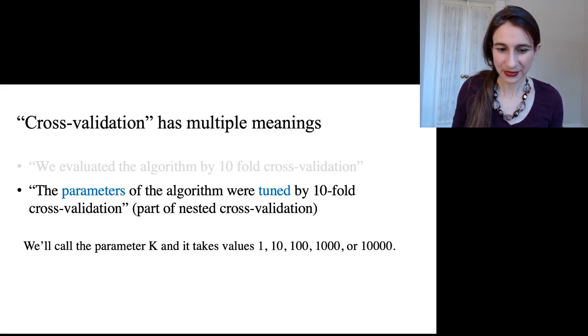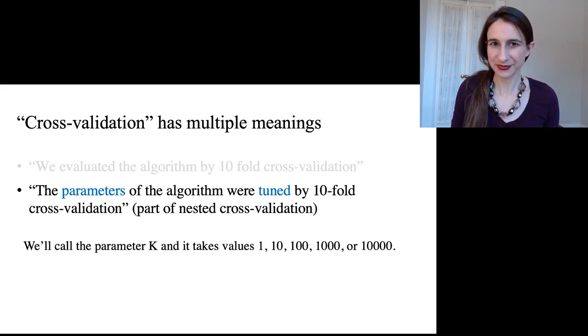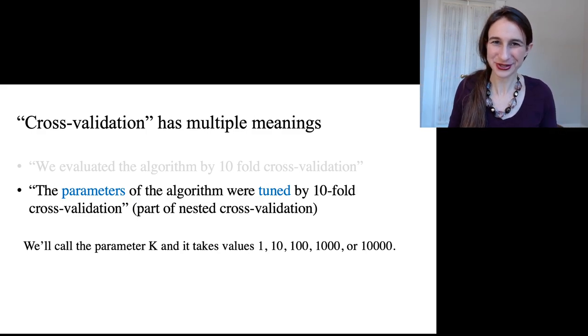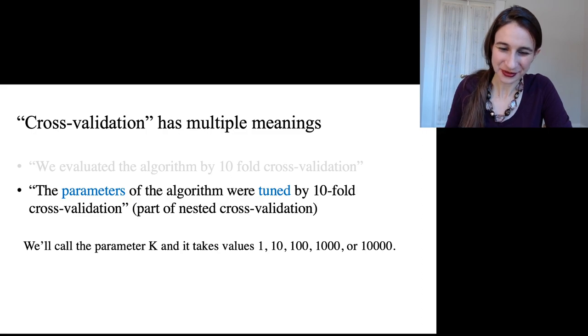I'll call the parameter K, and it takes five possible values: 1, 10, 100, 1000, or 10000. I just chose these values arbitrarily. Obviously, you would choose values of the parameters that were right for your problem.